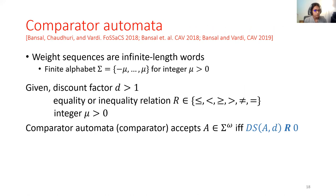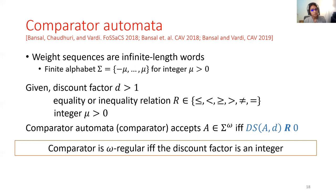And then, a comparator automata is formally defined as follows. For a given discount factor d greater than 1, and any equality or inequality relation r, and an integer mu, the comparator automata accepts a weight sequence a if and only if its discounted sum relates to the value 0 with a given relation r. Now, one of the key results here is that the comparator automata is omega regular if and only if the discount factor is an integer, which means that when the discount factor is an integer, then the comparison problem reduces to membership of a weight sequence inside an omega regular automata.